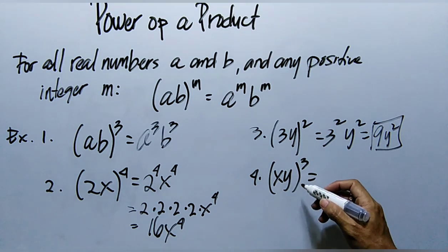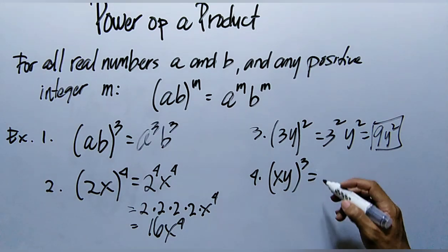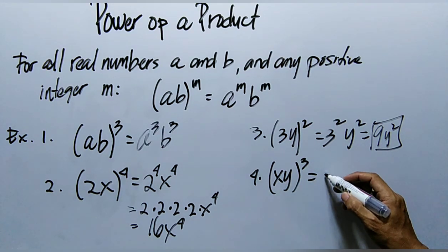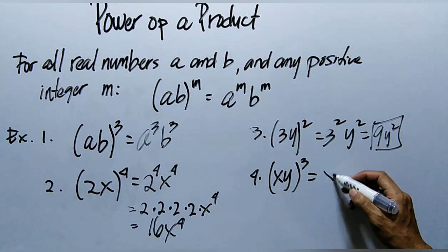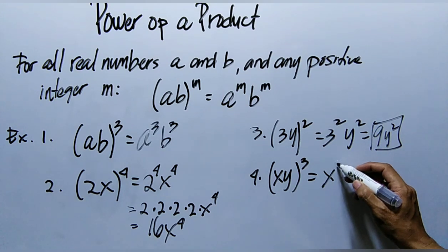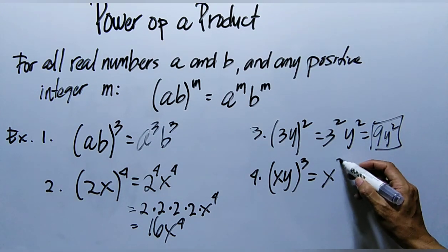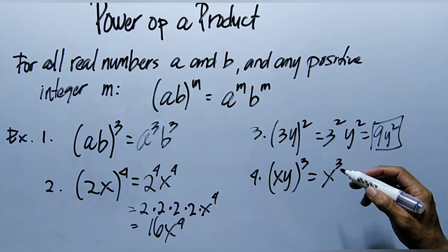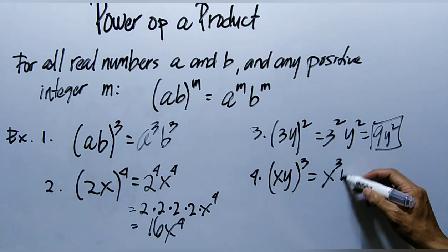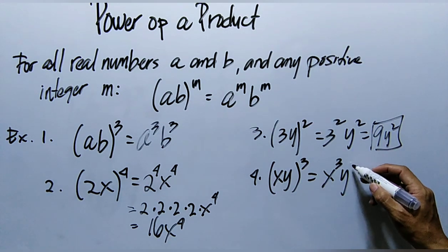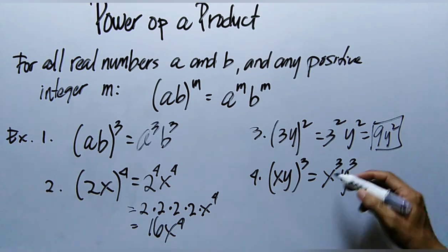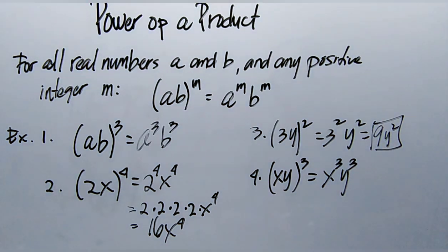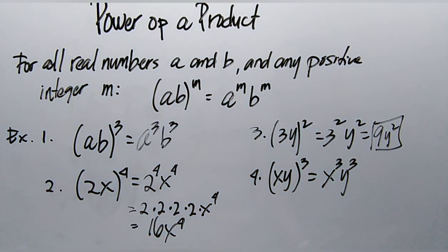Example 4, our last example: the quantity of xy raised to the power of 3. So x gets the exponent 3 and y gets the exponent 3. The final answer is x cubed times y cubed.